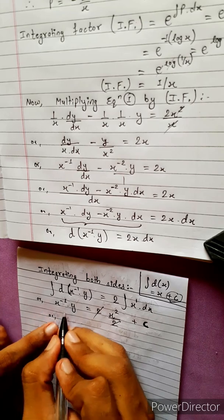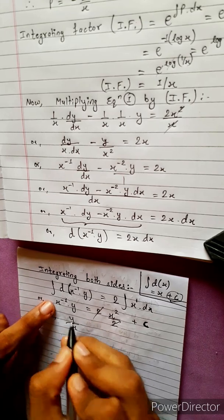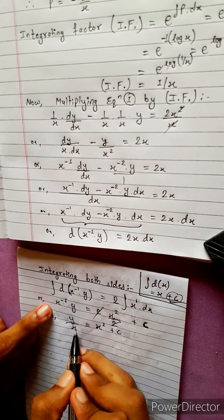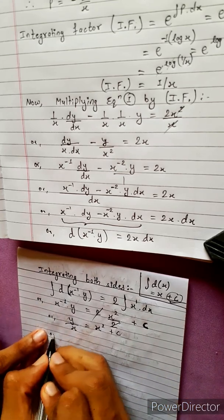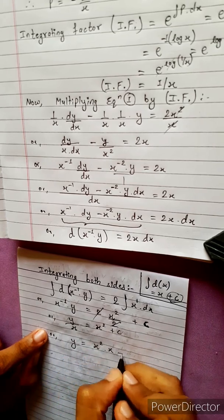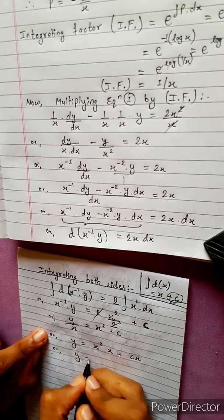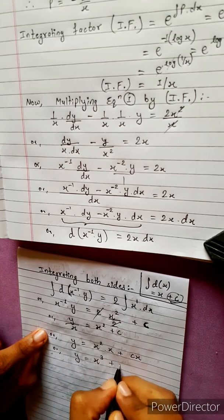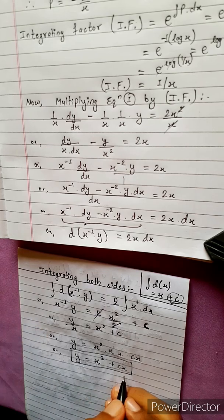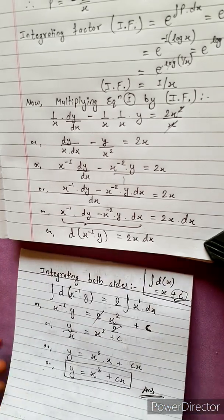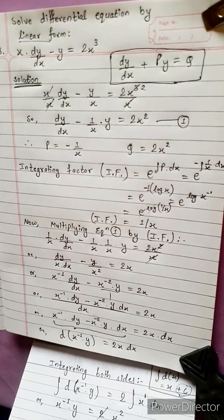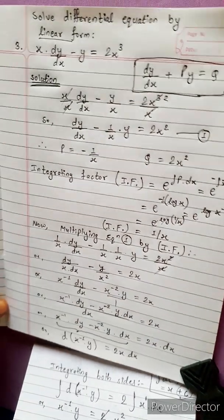We get y divided by x equals x squared plus c. Multiplying both sides by x gives y equals x squared times x plus cx, so y equals x cubed plus cx. This is the final answer.